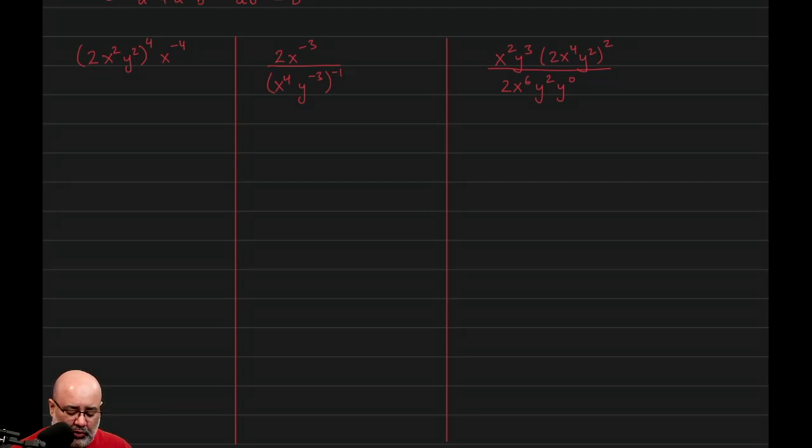So first we can use the product to a power property because we have a product here on the inside, and it's being raised to a power of 4. The product to a power property says that I basically have to apply that power to each of the three terms, or however many terms we have on the inside.